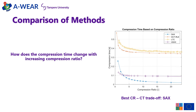Here we can see the comparison of four methods in terms of compression ratio to compression time dependency. Based on the simulation, lightweight temporal compression and discrete cosine transform require approximately five times longer to compress the data than the two remaining methods. The best compression ratio to compression time trade-off is achieved by symbolic aggregate approximation across the majority of compression ratios.